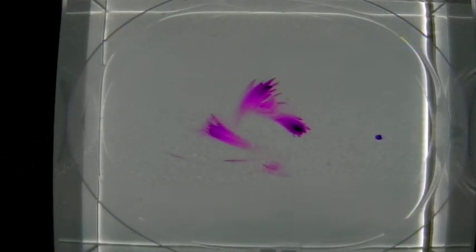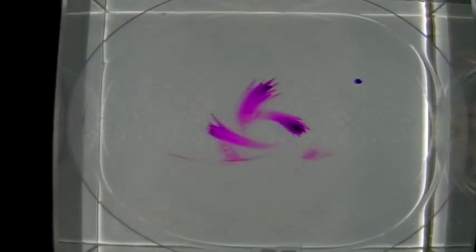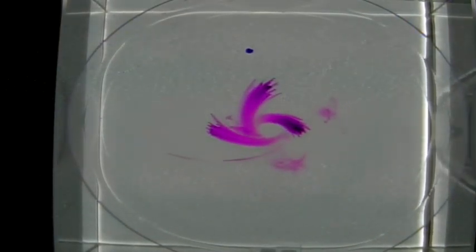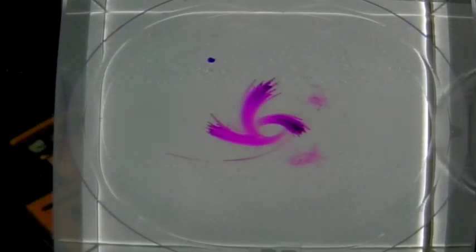However, the potassium permanganate crystals at the bottom of the tank are influenced by friction and don't move in a purely counterclockwise fashion. Instead, they're spiraling inwards towards the low pressure at the center of the tank.